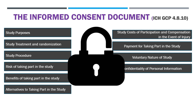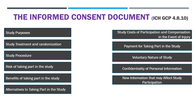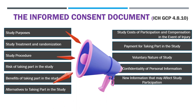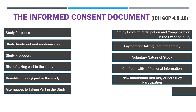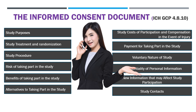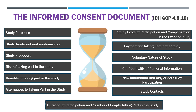10. Confidentiality of personal information — the monitor, auditor, IRB, and regulatory authority will be granted direct access to the participant's original medical records for verification of clinical trial procedures and/or data. 11. New information that may affect study participation — the participant must be informed in a timely manner if new information becomes available that may impact their willingness to continue participation. 12. Study contacts — the person to contact for further information regarding the trial and the rights of trial participants in the event of trial-related injury. 13. Duration of participation and number of people taking part — the expected duration of the participant's participation and the approximate number of participants involved in the trial.